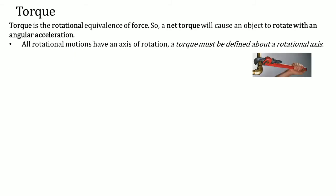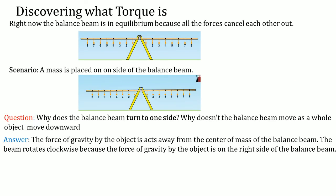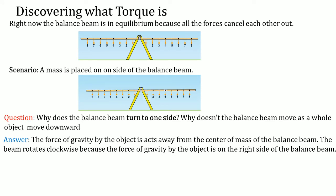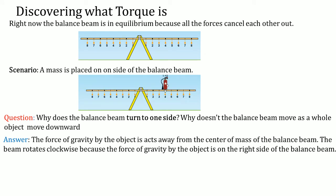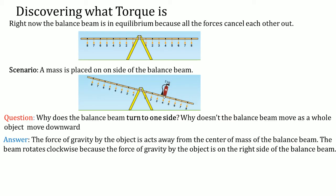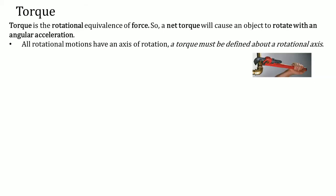This leads us to understanding what torque is. Torque is the rotational equivalent to force. Net torque will cause an object to rotate with an angular acceleration, like in our last problem. That object — the 5 kg fire extinguisher — is applying an angular acceleration to the balance beam because it causes it to accelerate in a circular direction. Therefore, it has an angular acceleration.